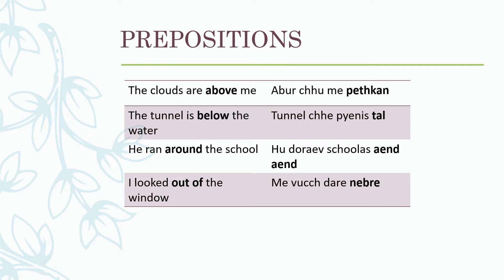The clouds are above me: abur chume petkin. Abur means clouds and petkin means above. The tunnel is below the water: tunnel ch pun is thal. Thal is below, and pun is water. He ran around the school: hu dour your schoolers and. And means around.